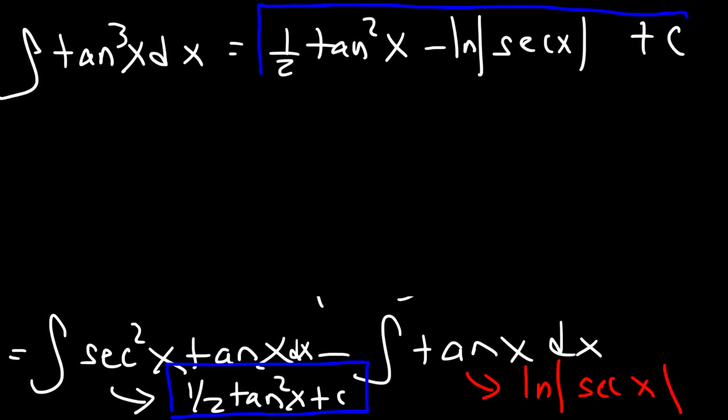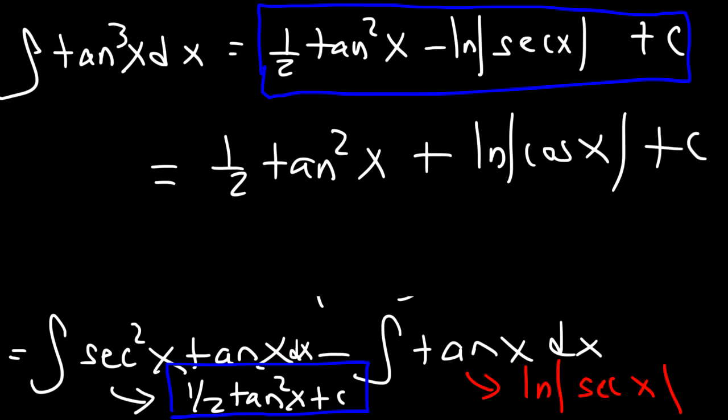So for the most part, the answer will be in this form. But you could write the answer like this if you want to get rid of the negative sign. This is equivalent to 1 half tangent squared plus ln cosine x plus c. So that's an alternative form to this answer.